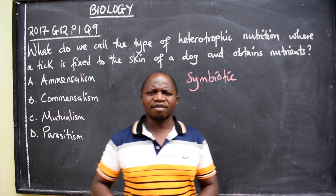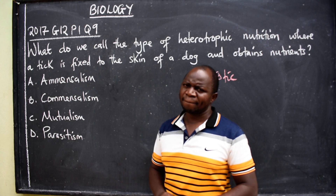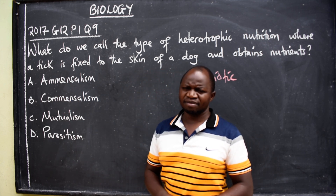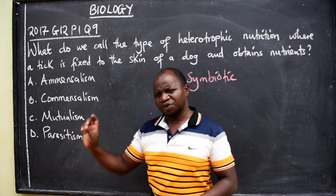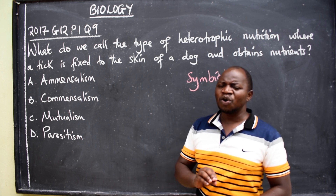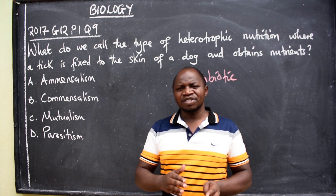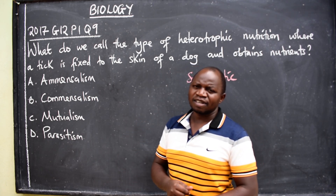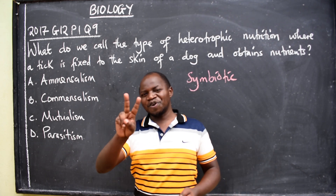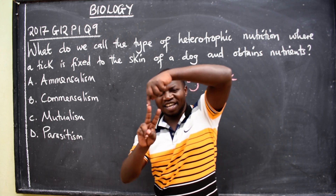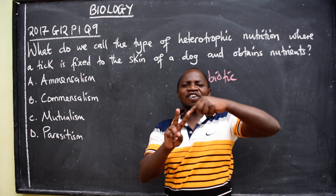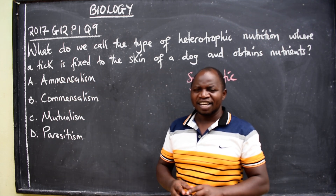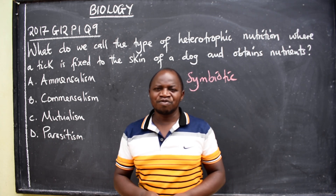Now we have these types of symbiotic relationships. The first one: amensalism. This is a type of association or relationship in which one organism destroys or harms another organism without it being affected. So here we are talking about two organisms — one organism destroys the other or harms it, without this organism being affected. It will remain unaffected. That is amensalism.